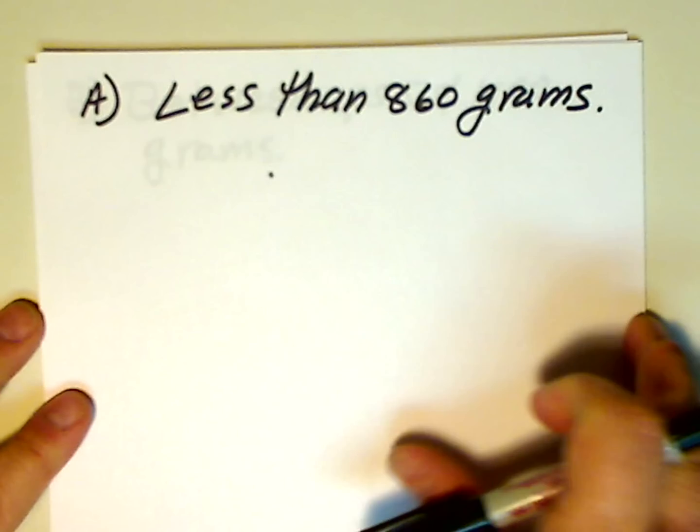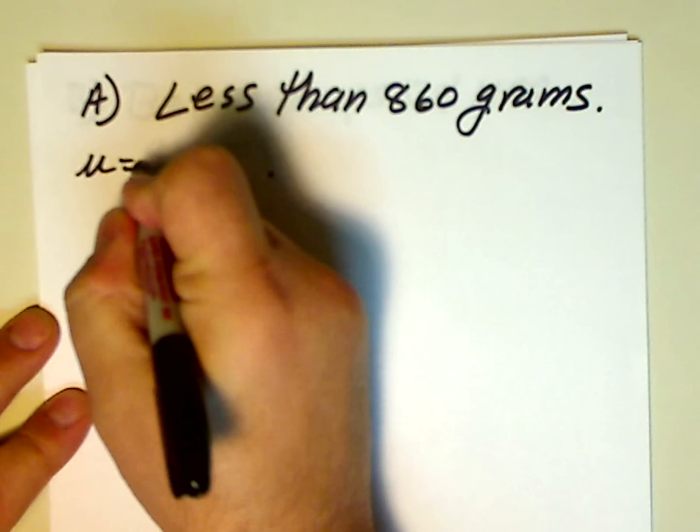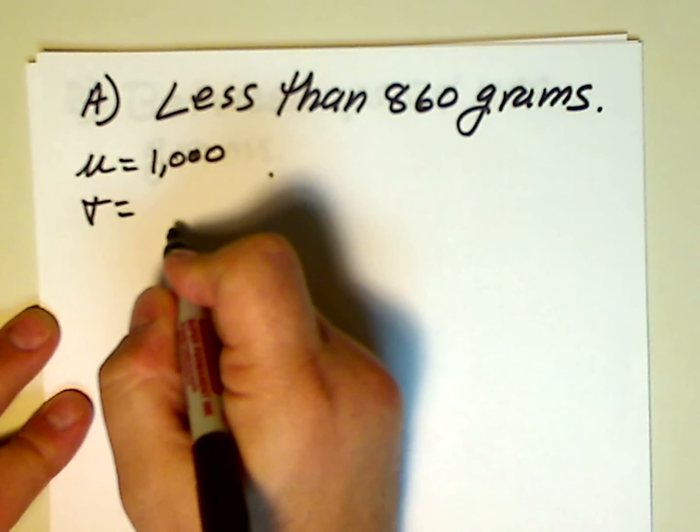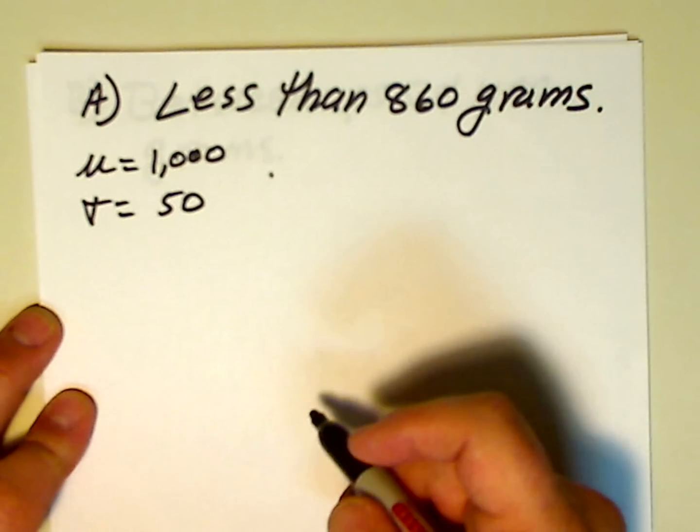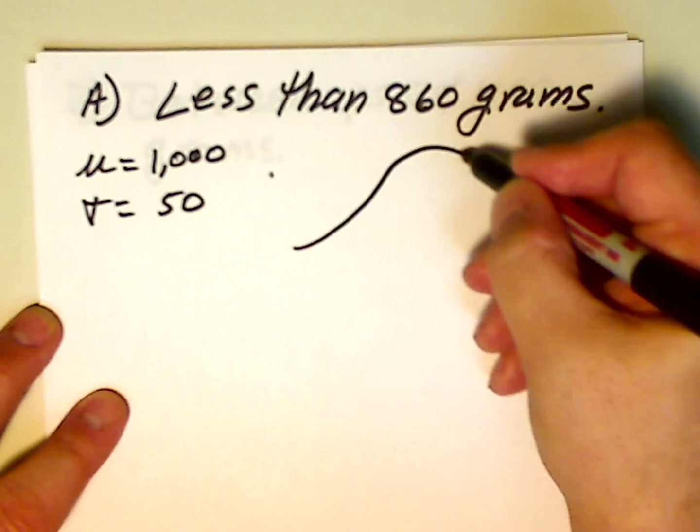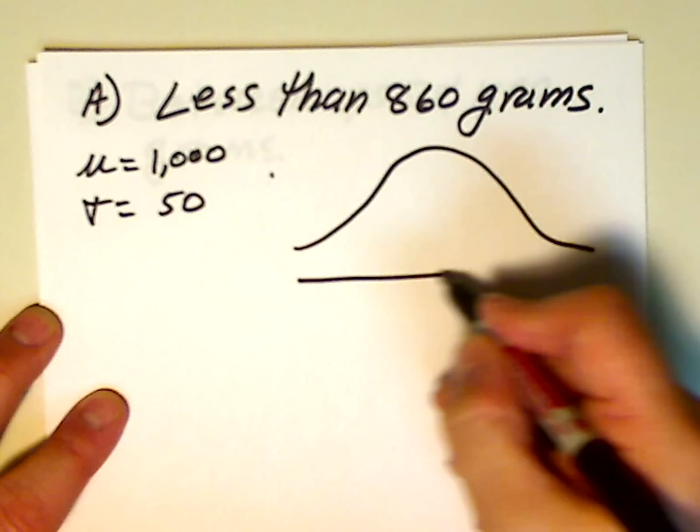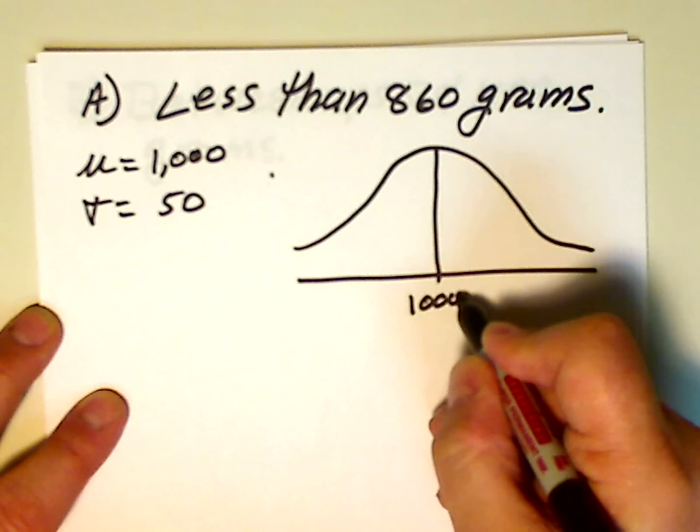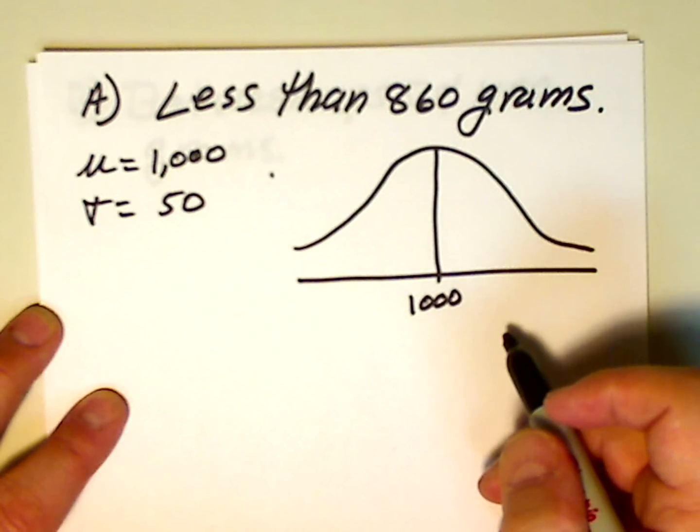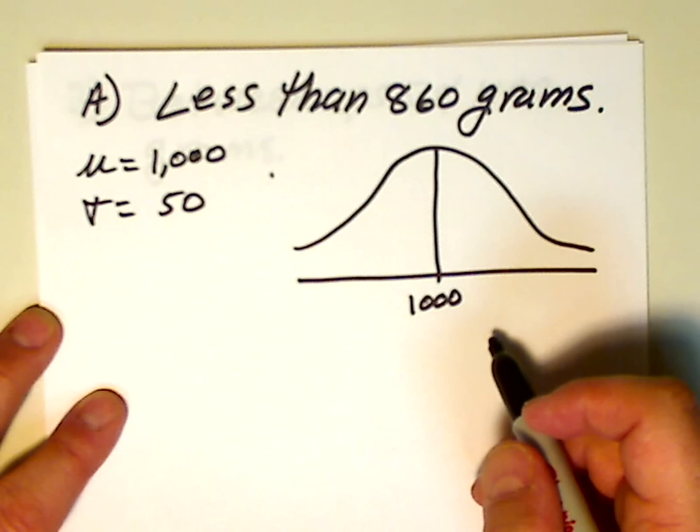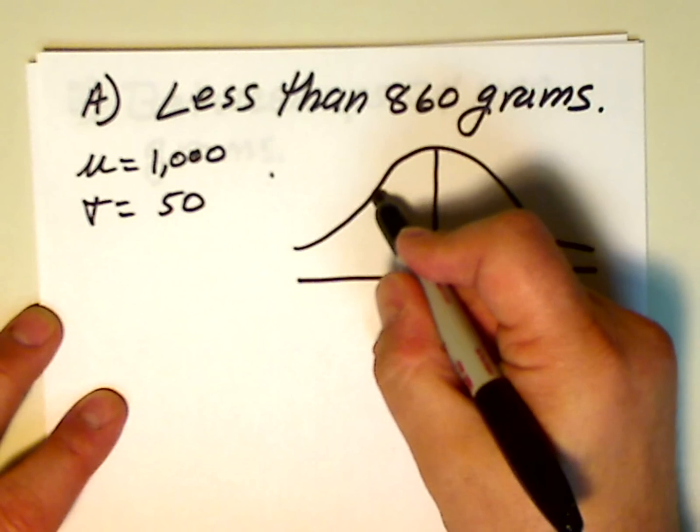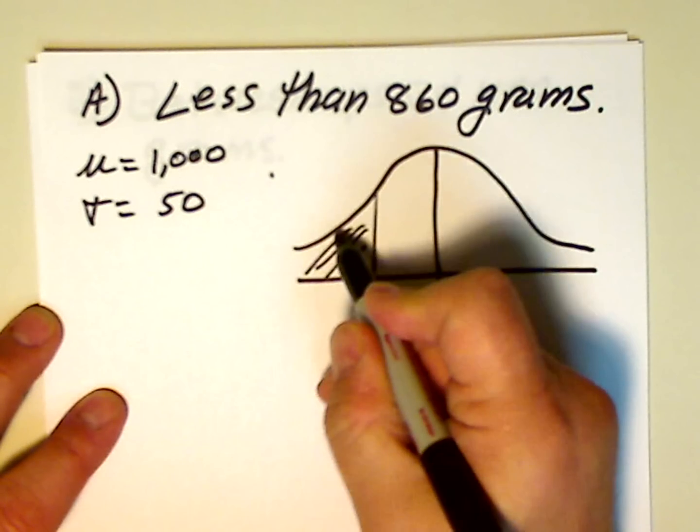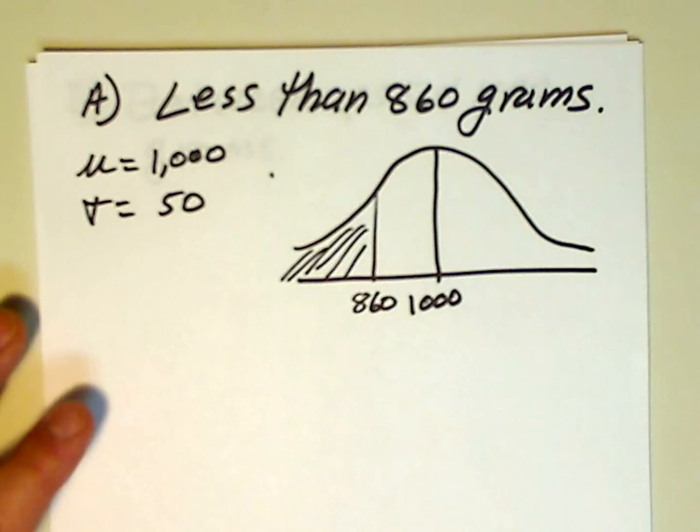So, we know that the mean is a thousand grams. We know that the standard deviation is 50 grams. Let's draw the picture. So here's a badly drawn picture of the normal distribution curve with a mean of a thousand. And we want, we're interested in less than 860. So 860 is to this side, and that's the region in which we're interested.